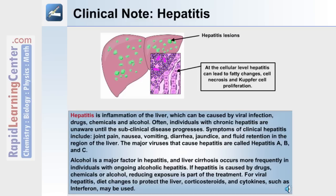If hepatitis is caused by drugs, chemicals, or alcohol, reducing the exposure is part of the treatment for those individuals. For individuals with viral hepatitis, diet changes to protect the liver and corticosteroids can be used along with cytokines such as interferon.